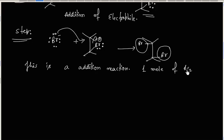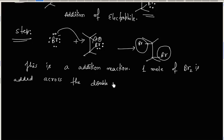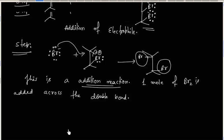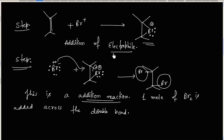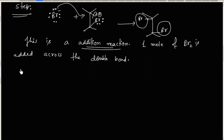One mole of bromine is added across the double bond. This reaction is an addition reaction, and the fastest step is addition of electrophile. That is why this is called electrophilic addition reaction — addition of halogen to an alkene is an example of electrophilic addition reaction.